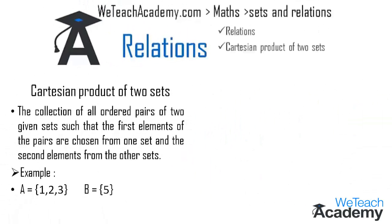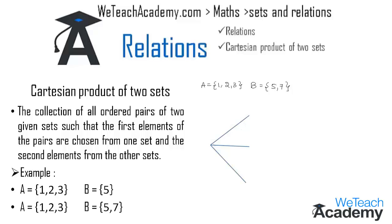Let us solve another example. Here we have set A = {1, 2, 3} and set B = {5, 7}. We will represent this using a tree diagram to find all the ordered pairs. Set A has three elements: 1, 2, and 3. Every element of set A is mapped with the elements of B. So element 1 is mapped with both 5 and 7, element 2 is mapped with 5 and 7, and element 3 is mapped with 5 and 7.